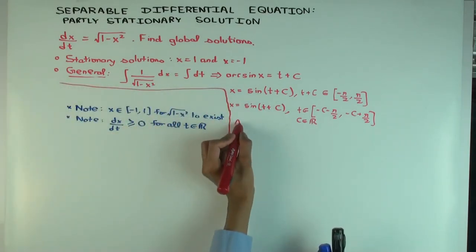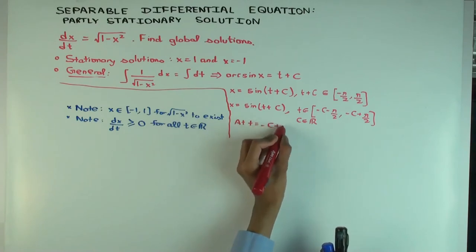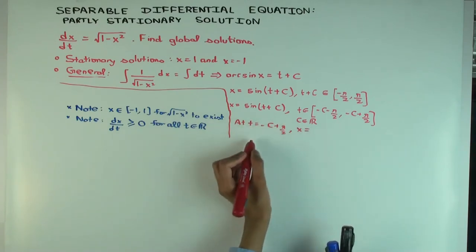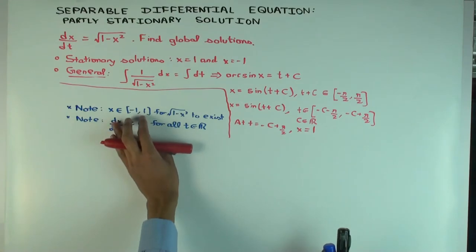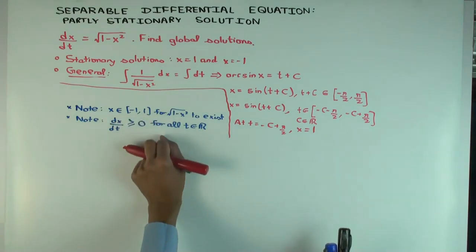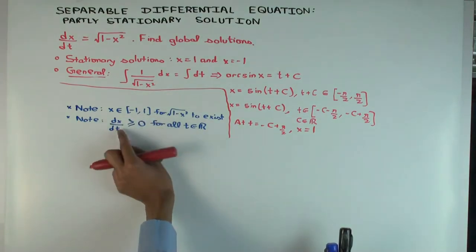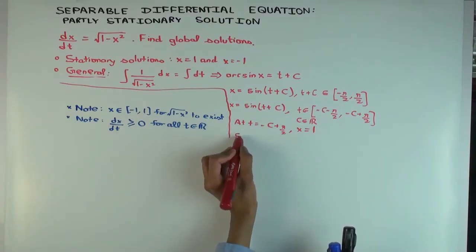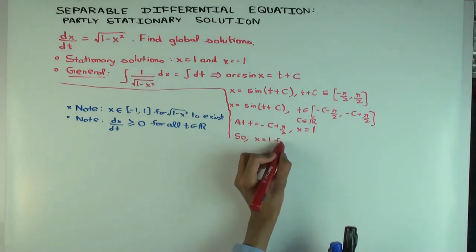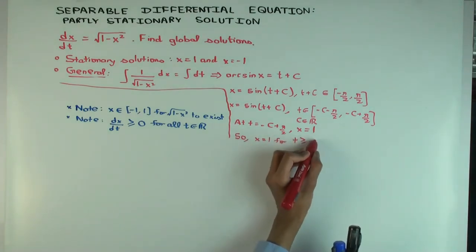Now what is the value at -c + π/2? So, at -c + π/2, what is x? x = sin(π/2) = 1. Okay, now x has to remain between -1 and 1. So it cannot go up further, right? Beyond this point. Can it go down after this point? Yeah. It can, but I thought the derivative is always greater than or equal to 0. Oh, so it will remain constant. Okay, so x = 1 for t ≥ -c + π/2.